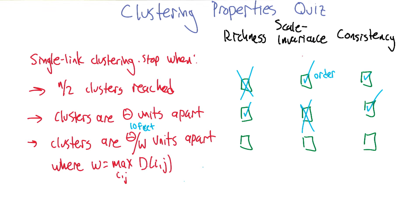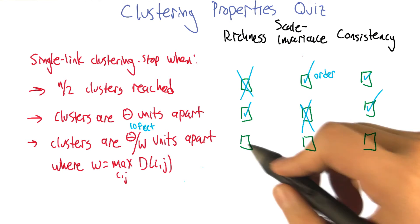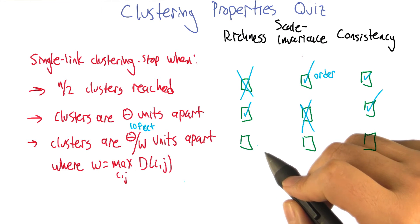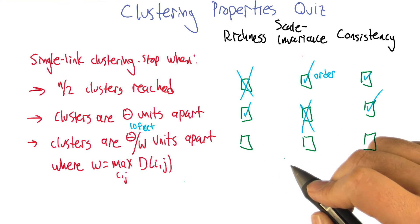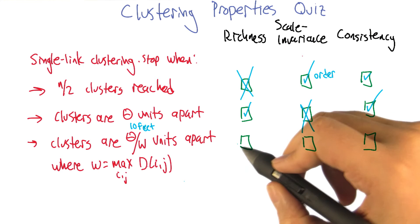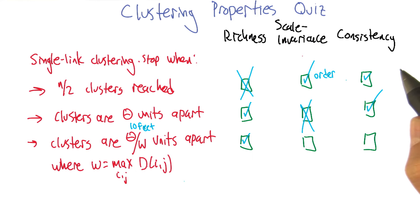Last example. Clusters that are theta omega units apart. Theta divided by omega, yeah, where omega equals the maximum distance. Well, that's just a way of normalizing distance. In much the same way that I argued for richness for the second algorithm, the same argument applies here. That it is rich.